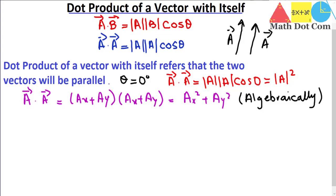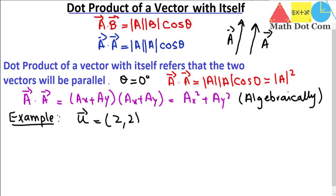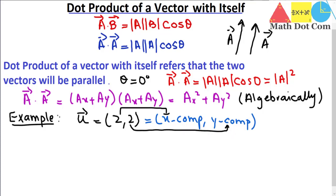Now let's have an example so you can have a clear concept. Whenever you are given just one vector and asked to find its dot product with itself, let the vector be u defined as (2, 2). The first value is the x-component and the second is the y-component. We will find the dot product both geometrically and algebraically, and you will see that both give the same result.